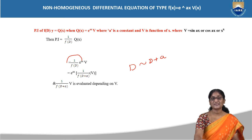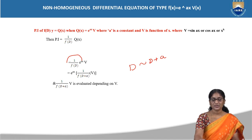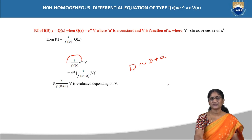If v(x) is sin(ax) or cos(ax), replace D² by minus a² and proceed further. If v(x) is in the form of x to the power of n, take the aid of the binomial expansion for negative indices and move further. That is the procedure for finding out the particular integral when Q(x) is a product of two different functions.